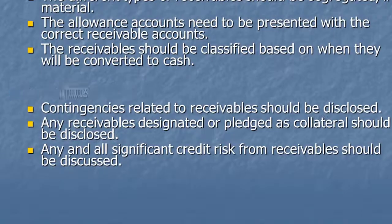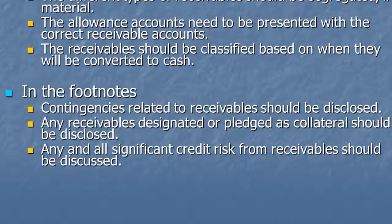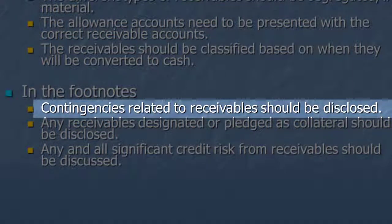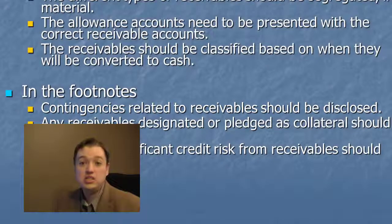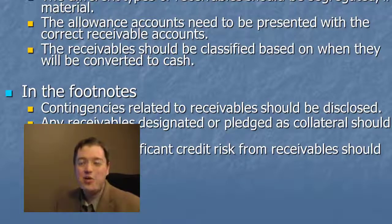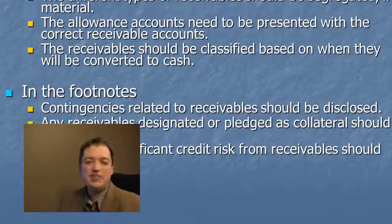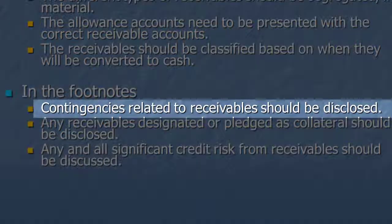In addition to what goes into the financial statements, there's a lot of things we have to put in the footnotes about receivables. If there are any contingencies related to receivables, we have to disclose those. We may have to describe the fact that we just started a credit policy and we have no idea how much we'll be able to collect, or we're not sure what default will do to us. We also need to talk about how we decided what portion will actually be collected — whether we use percent of sales or percent of accounts receivable, and what percentage we used.